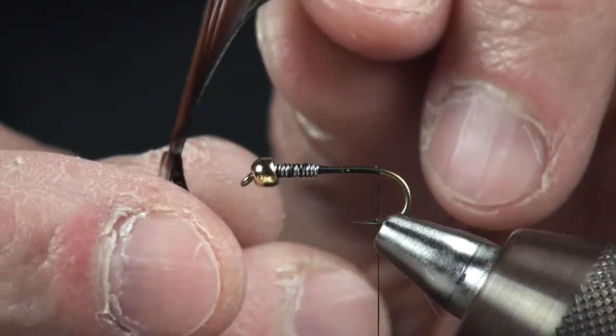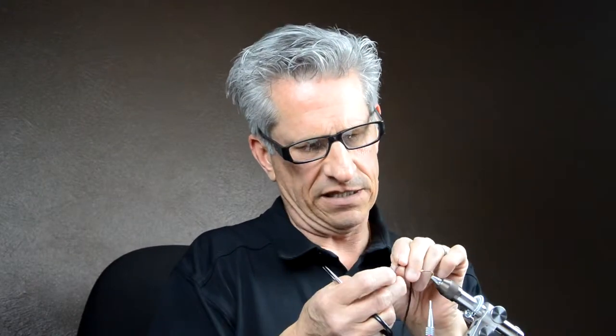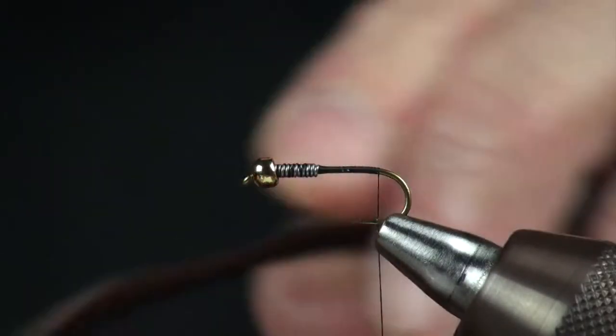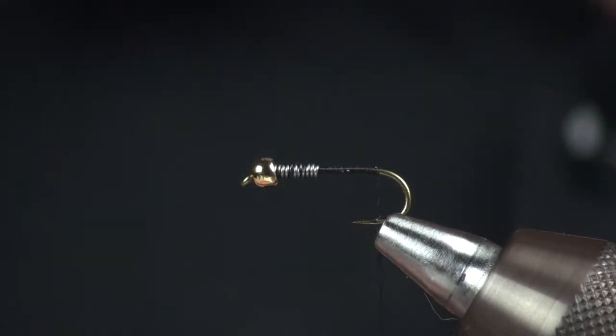Now we're going to use some goose biots for the tail and also for the wing. And when I'm looking for using this material, what I like to do is, for the tails, I like to pull the biots off more towards the tip. That makes for a very small base, nice little tail. And then in the white biot for the wing, I'm going to go down here more towards the base. And that's going to yield a little wider biot so that I have a little bit more material to attach to this fly.